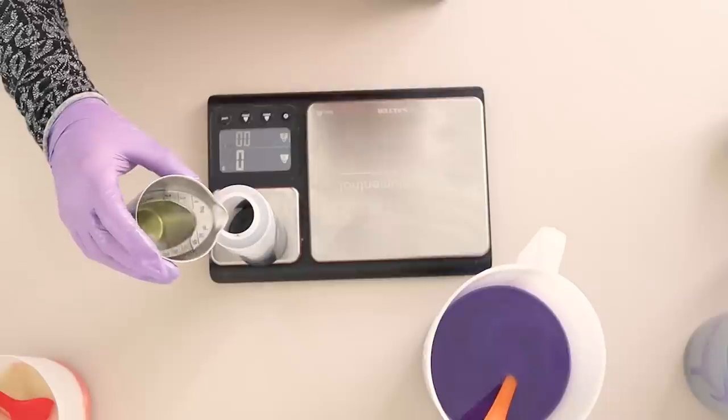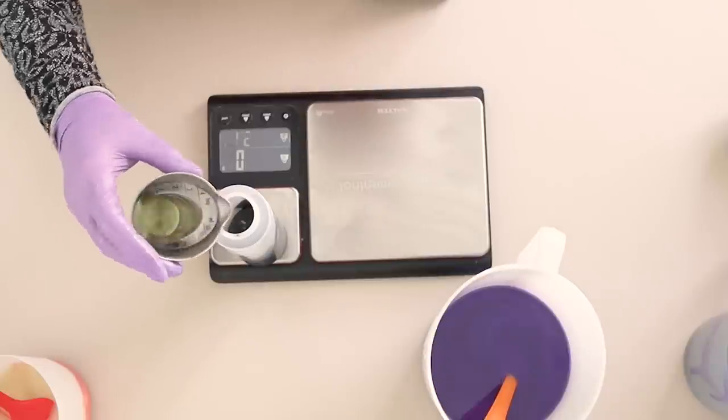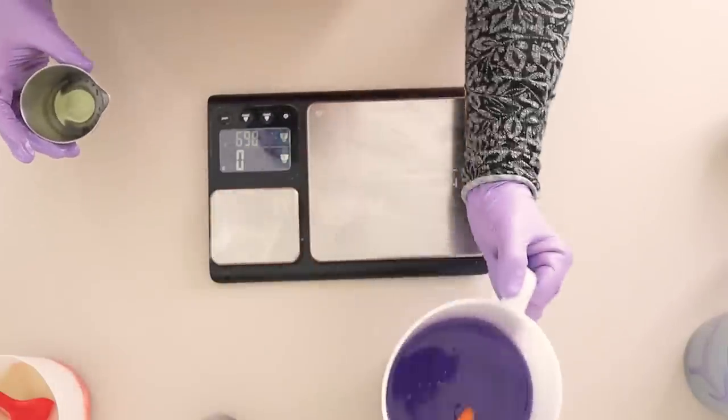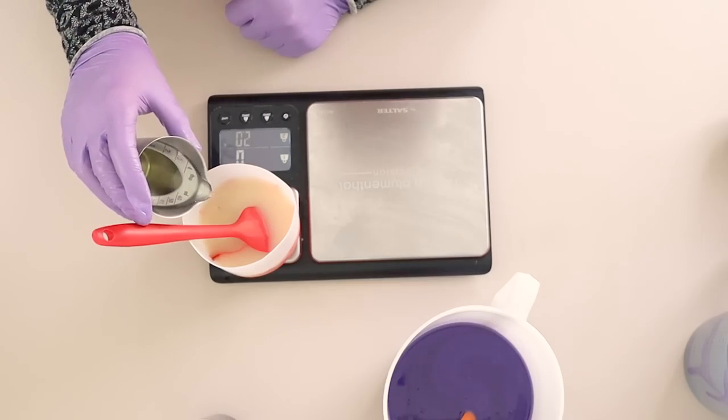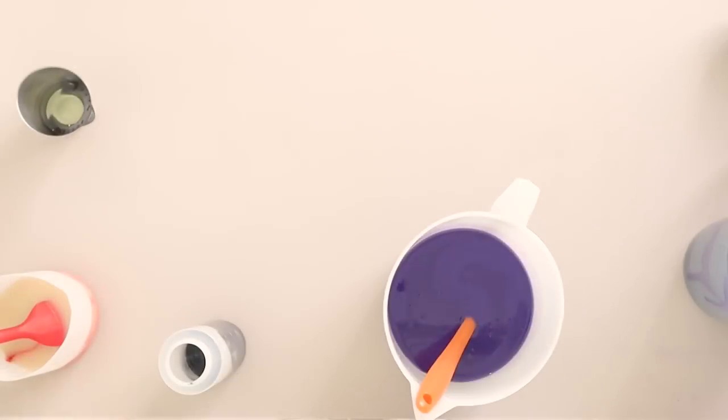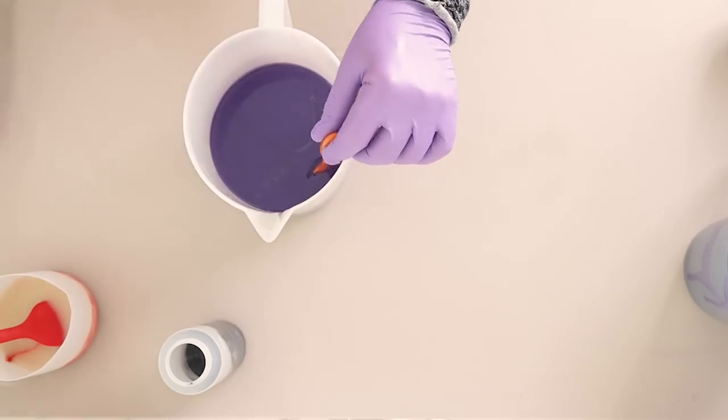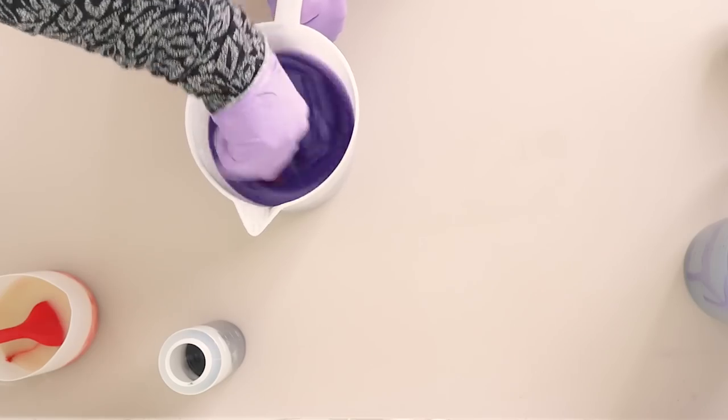I'm continuing to use Dragon's Blood from Nature's Garden throughout the whole soap so I'm just adding that to the various portions. Once everything's mixed in we're ready to start our pour.